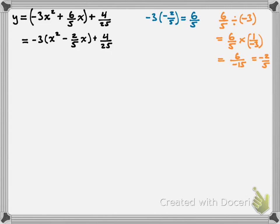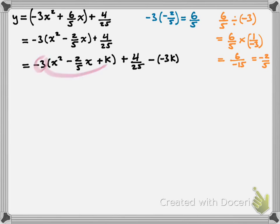In our next line, we add k into the brackets and then rebalance. So we get negative 3 times x squared minus 2 over 5x plus k, plus 4 over 25. Now we need to rebalance. The leading coefficient is negative 3, so by putting k inside the brackets we've effectively added negative 3 times k. So we subtract negative 3 times k to rebalance, which is the same as adding 3k.